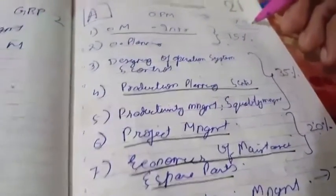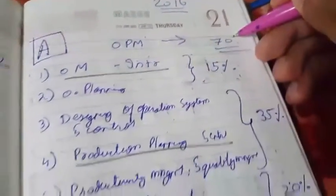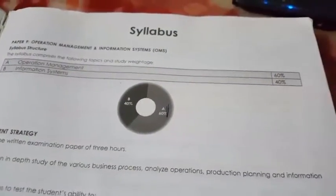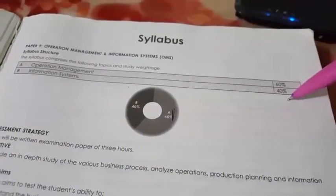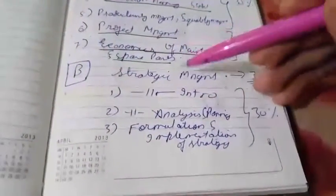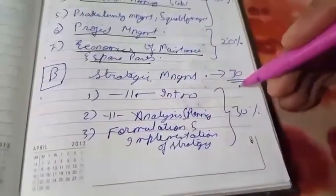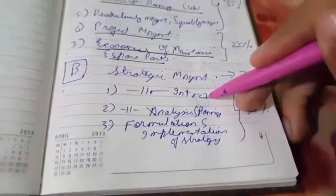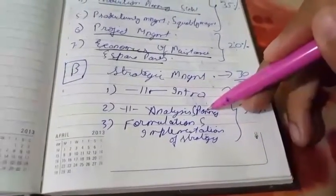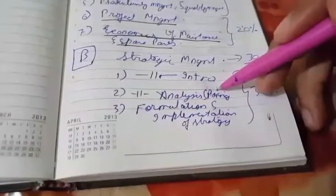So in all — 15, 35, and 20 — Operation Management is 70 marks. Earlier in syllabus 2012, Section A operation management was 60 marks, but now it has been increased to 70 marks. The second major change is that in syllabus 2012, Section B was information systems, but in syllabus 2016, Section B is Strategic Management covering 30 marks — including strategic management introduction, strategic analysis, strategic planning, and formulation and implementation of strategy.